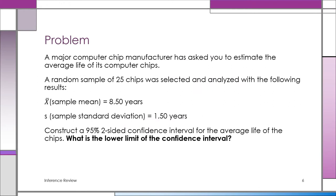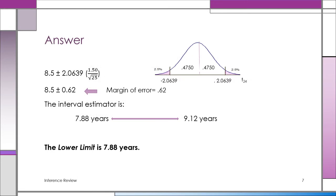Let's look at this problem. A major computer chip manufacturer asked you to estimate the average life of its chips. They took a sample of 25 computer chips — right away you realize 25 is a small sample. X-bar, the sample mean, is 8.50 years; s, the sample standard deviation, is 1.5 years. We want to construct a 95% two-sided confidence interval for the average life of the chips.